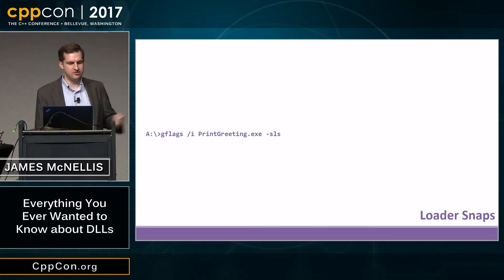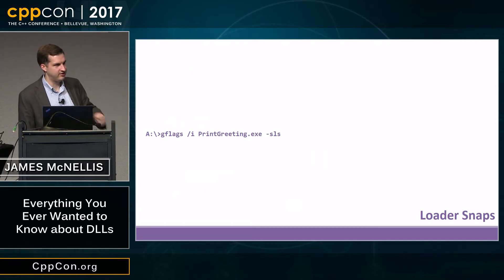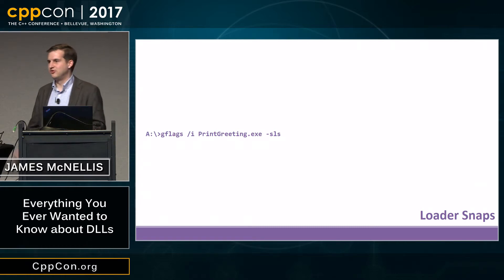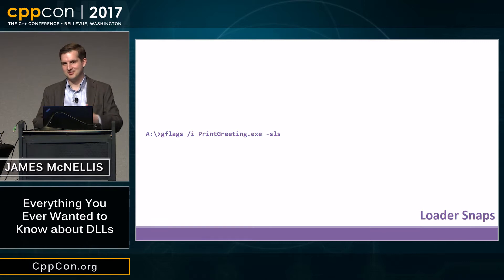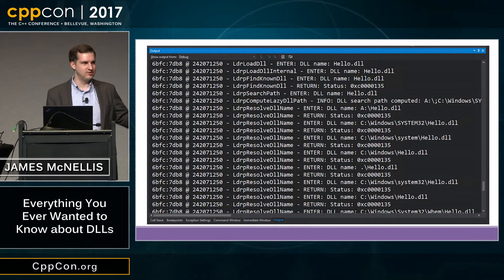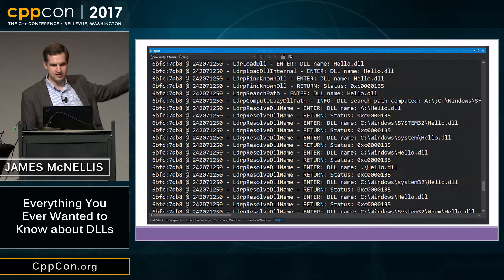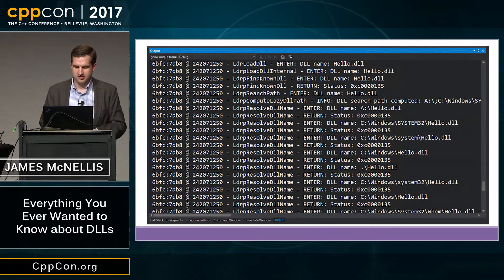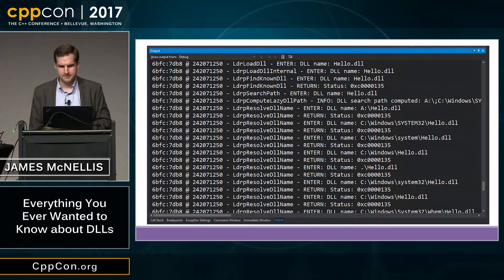When you're done, run gflags again with '-sls' instead of '+sls' to turn it off. You're probably thinking this is a great reason to use the Windows debuggers — but this actually works with any debugger. You run the gflags program separately, and the output shows up in Visual Studio as well. The loader uses OutputDebugString internally, so any debugger can capture it.